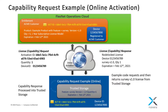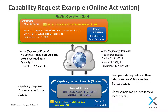The example will then perform a license request for the survey feature from trusted storage, followed by a license return back to trusted storage. The view example can then again be run after this license activation to view the details of the licenses in trusted storage.